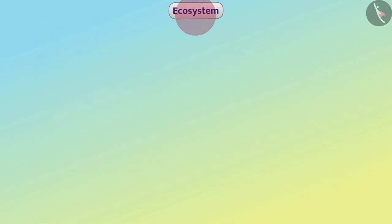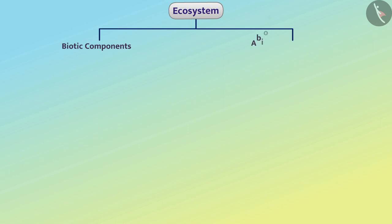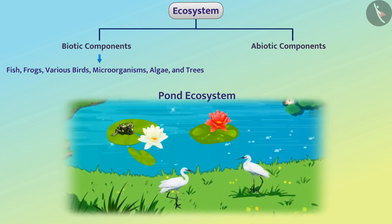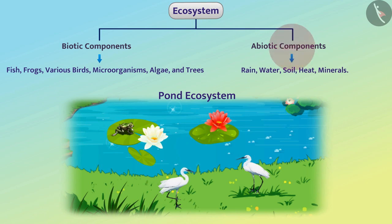Any ecosystem consists of biotic components and abiotic components. For example, fish, frogs, various birds, microorganisms, algae, and nearby trees living in the pond ecosystem are all called biotic components, while rainwater, soil, heat, and minerals are all abiotic components.